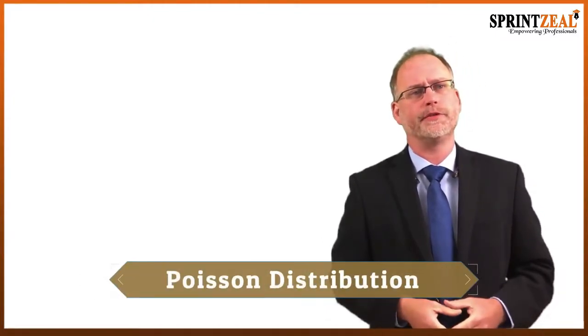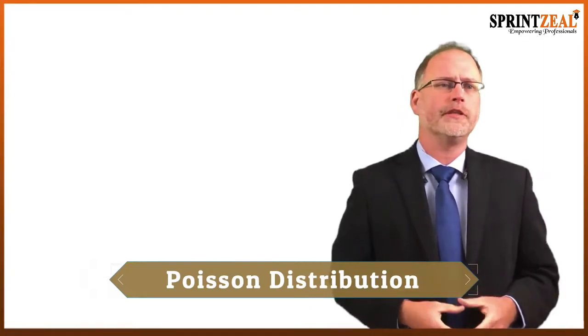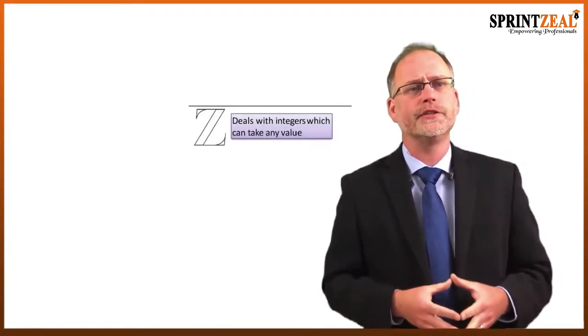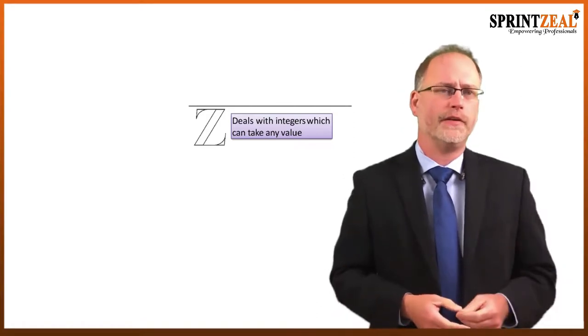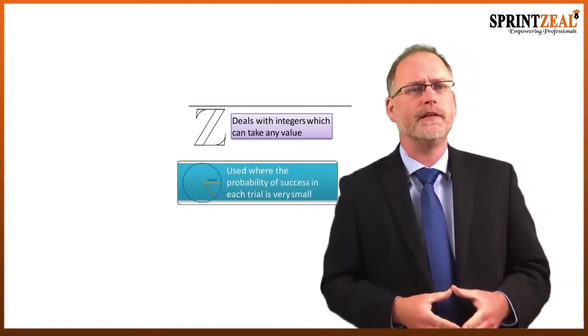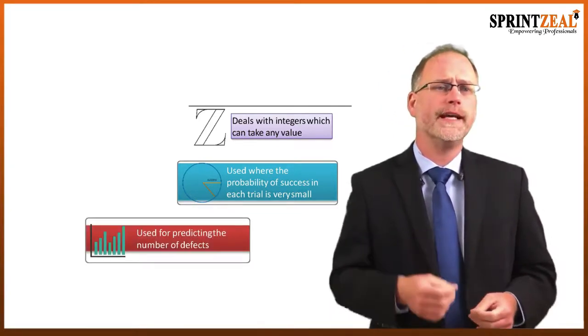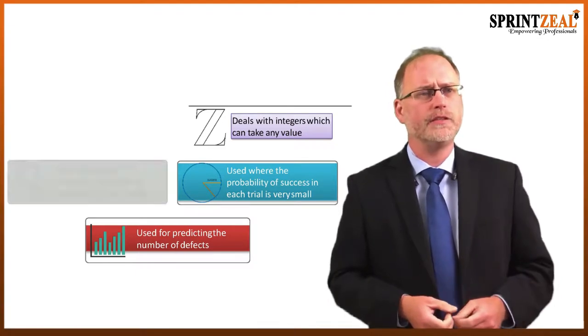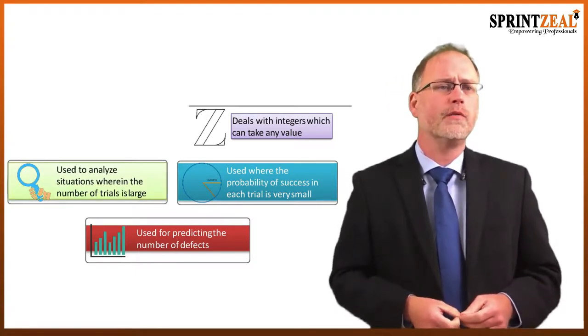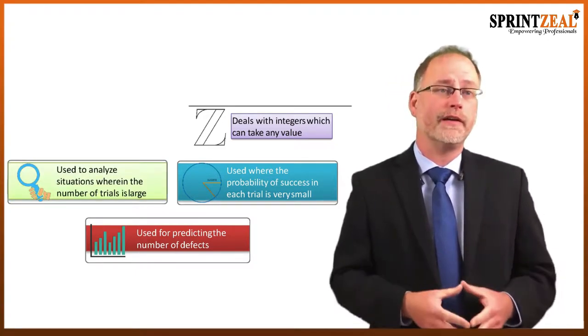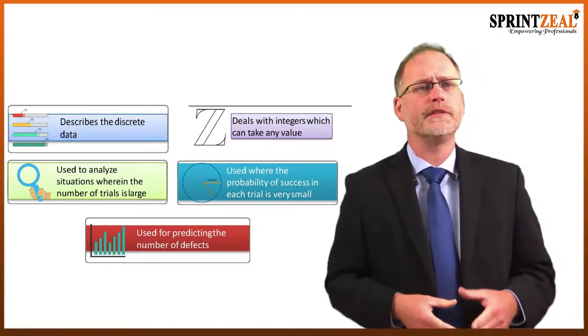Another form of distribution we'll look at is the Poisson distribution, which is an application of population knowledge to predict sample behavior. Some characteristics of the Poisson distribution: it deals with integers that can take any value, it's used where the probability of success in each trial is very small, it's used for predicting the number of defects, and it's used to analyze situations where the number of trials is very large. It describes discrete data.